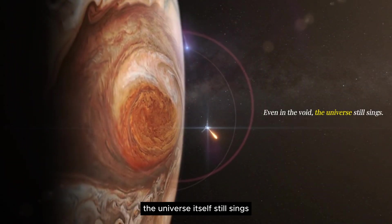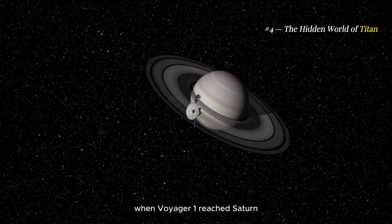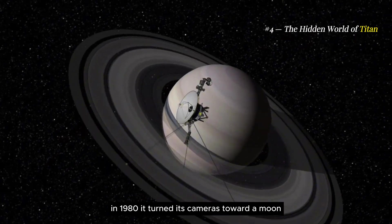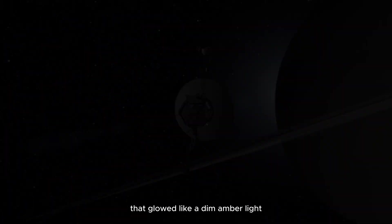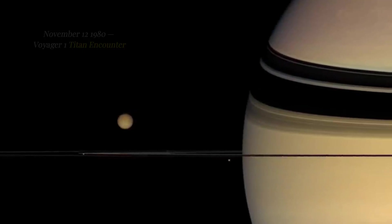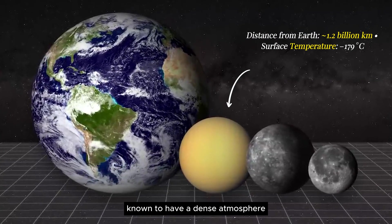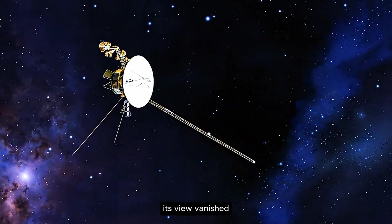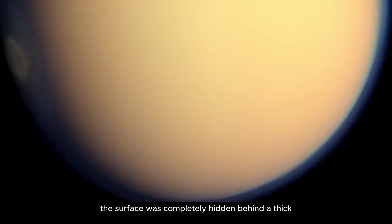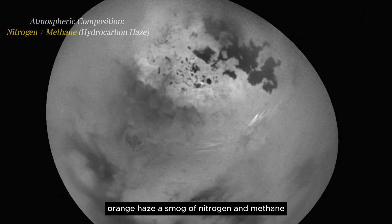When Voyager 1 reached Saturn in 1980, it turned its cameras toward a moon that glowed like a dim amber light. That moon was Titan, the only world besides Earth known to have a dense atmosphere. But as Voyager approached, its view vanished. The surface was completely hidden behind a thick orange haze, a smog of nitrogen and methane so dense that even sunlight couldn't reach the ground.